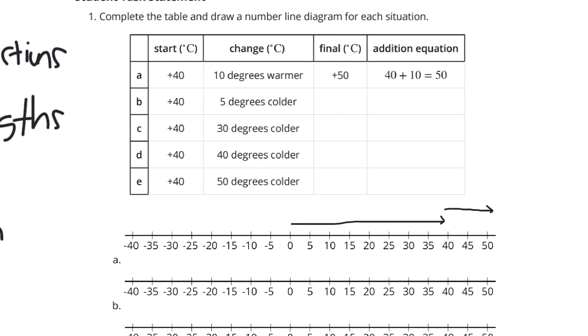What about B? Starting at 40 and getting 5 degrees colder. We're starting at 40, and then we're getting 5 degrees colder. We're going back 5, and we're going to end up at 35. So our answer is 35, and our addition equation here is 40 plus, getting 5 degrees colder, is represented by a negative 5. So, 40 plus negative 5 is equal to a positive 35.